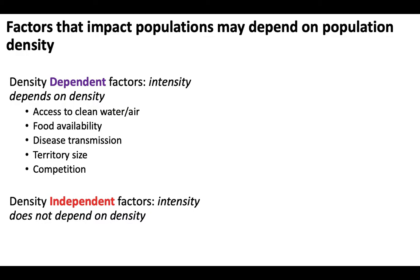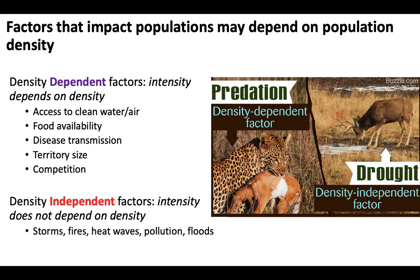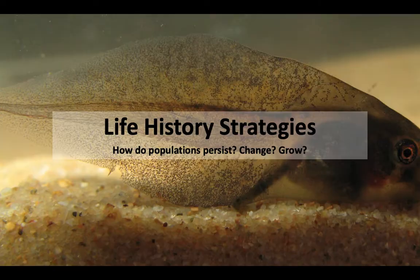On the flip side, density-independent factors change population size regardless of how big or dense the population originally is. These include natural disasters, global warming, climate change, and sea level rise. For example, a forest fire will wipe out a forest regardless of how dense the population of trees and animals is — it doesn't discriminate. Similarly, drought is density-independent: it doesn't matter how many deer there are, drought will negatively impact the population regardless.